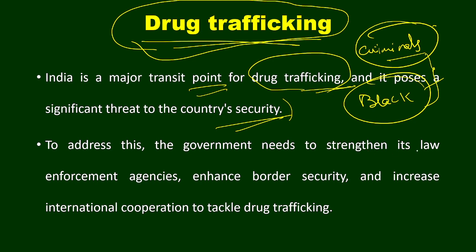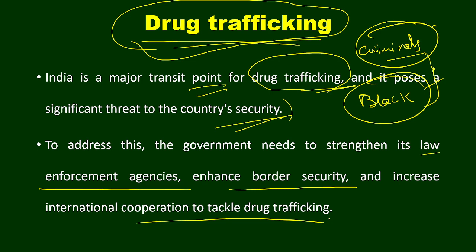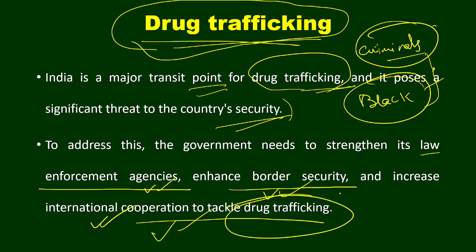To address drug trafficking, the government needs to strengthen its law enforcement agencies, enhance border security, and increase international cooperation. Several agencies like the police and the Narcotics Bureau are already involved in anti-drug activities. Border security should be enhanced so that narco substances cannot enter the country across borders. International cooperation with neighboring countries like Myanmar and Bangladesh is also required to reduce and minimize drug trafficking.